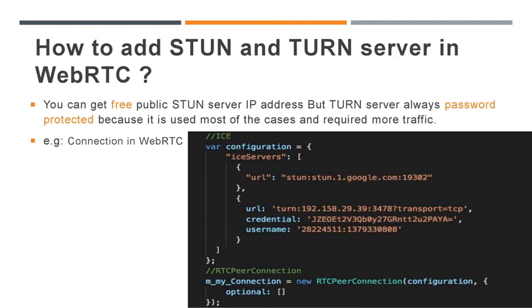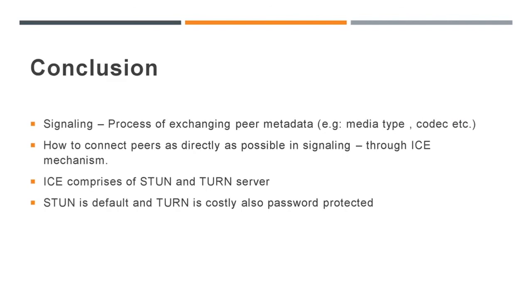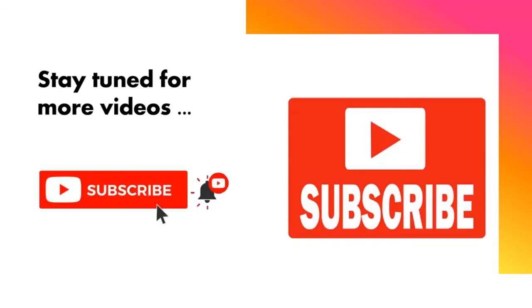I think that is enough for today. Let us conclude. We have understood that signaling is the process of exchanging peer metadata, such as media type, codec, etc. ICE framework is required to connect peers as directly as possible during signaling. ICE uses STUN and TURN servers to get the public IP address. STUN is the default and TURN is costly and password protected. I hope you got a better idea about the WebRTC signaling process, STUN, and TURN. Let us see more in upcoming videos. If you found this informative, please like, share, and subscribe. Thank you, and have a wonderful day.